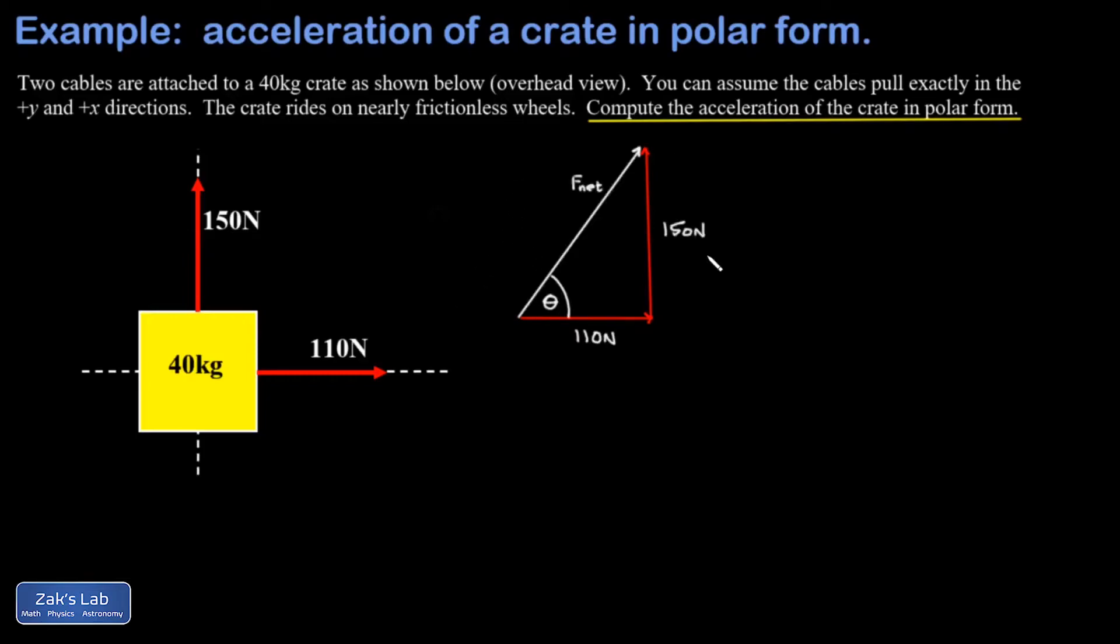Now we can find the magnitude of the net force using the Pythagorean theorem. The sum of the squares of the legs equals the square of the hypotenuse. I'll square root both sides and solve for the hypotenuse, which is the square root of the sum of the squares of the legs. When I run the numbers, I get 186 Newtons.